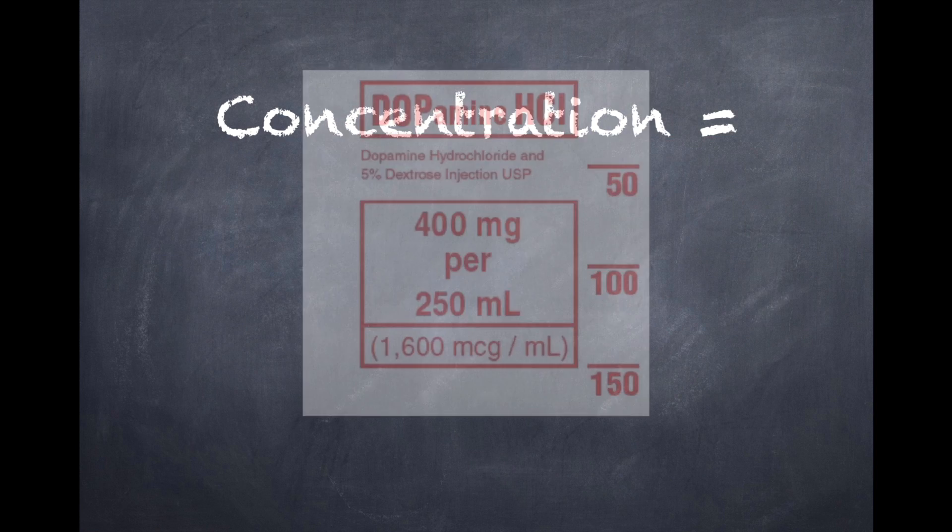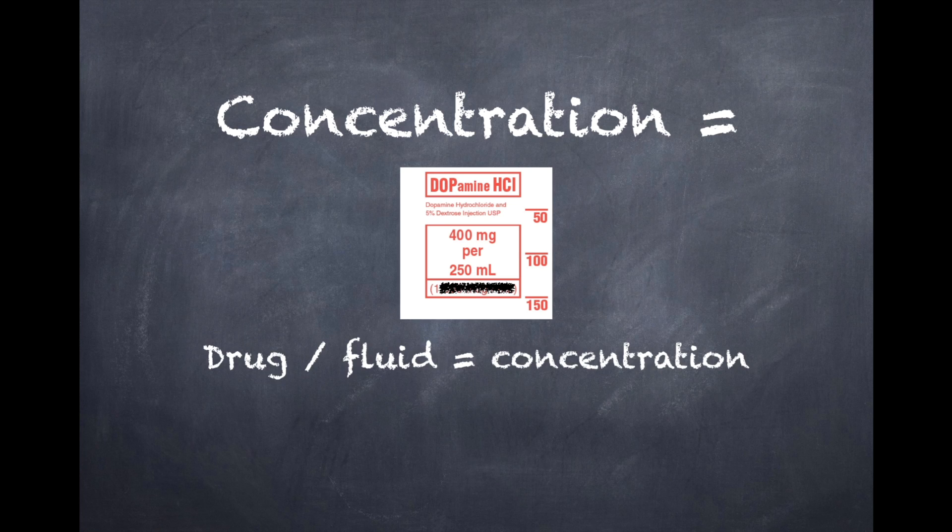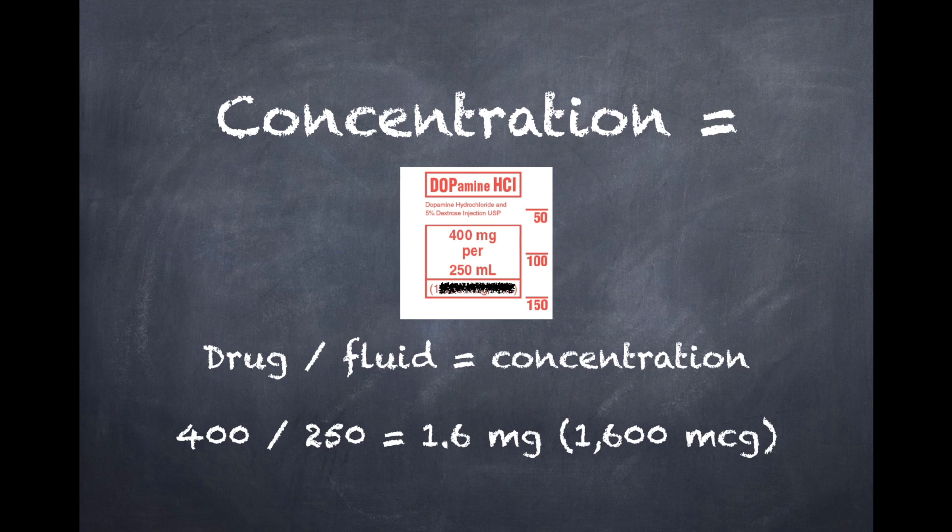So how do you figure out a concentration? Well, usually when you look at a label, it's already going to have the concentration on there, but sometimes you'll run into this situation where it'll just have the milligrams and the amount of fluid that it's in. So what do you do then? Well, if you divide your drug by your fluid, so like in this instance, 400 divided by 250, it'll give you how many milligrams are in each milliliter. But what we want in this calculation is always going to be micrograms. So what we got here, 1.6, that's really 1,600 micrograms.